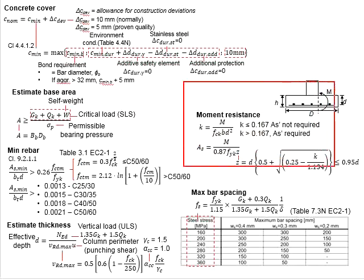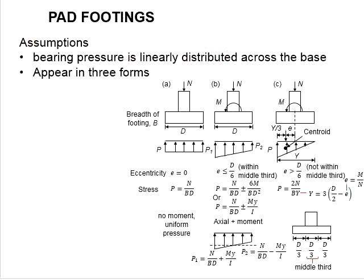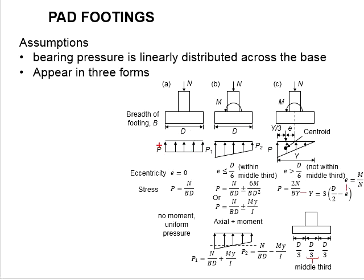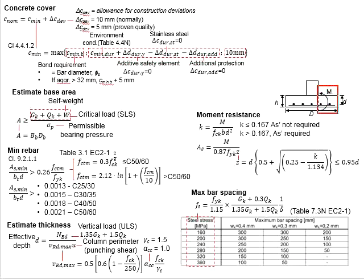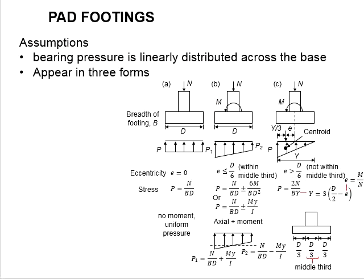Next, we look into the design for the moment resistance of the member. First, you will need to determine the distributions of the bearing pressure onto the foundations. This distribution is calculated on the basis of the ultimate limit state with the factor of safety of 1.35 and 1.5 for GK and QK respectively. Based on the stress generated by the soil acting on the foundations, you will need to determine the moment acting on the foundations in line with the surface of the columns. This is typically calculated by multiplying the resultant force of the stress with its lever arm to the surface of the foundations.